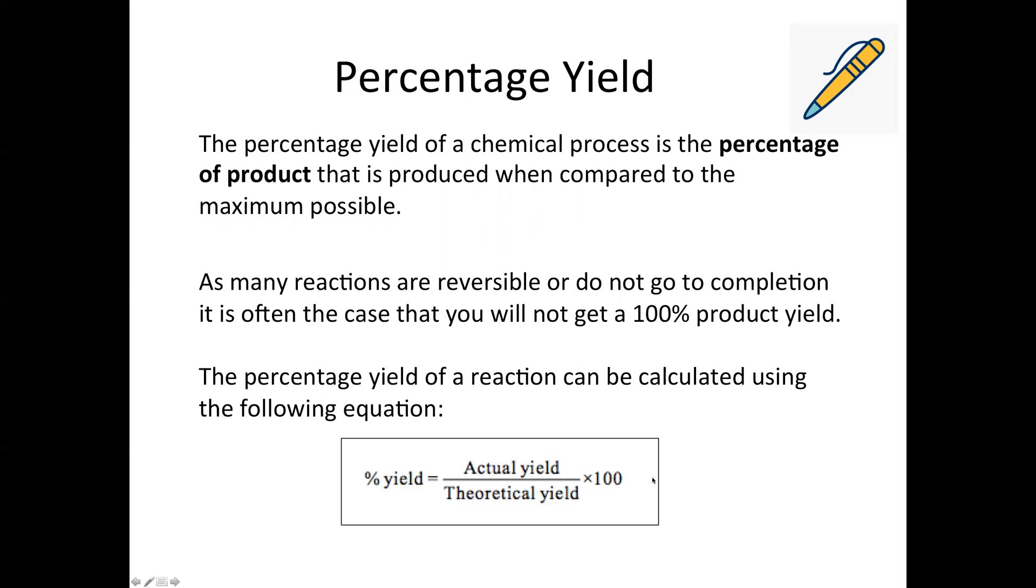So we use this equation that you get given in the data booklet on the formula page. The percentage yield is equivalent to the actual yield, so that's what you actually produced, divided by the theoretical yield, which is what you would produce in an ideal world where all the reactants get converted into products, times by 100.